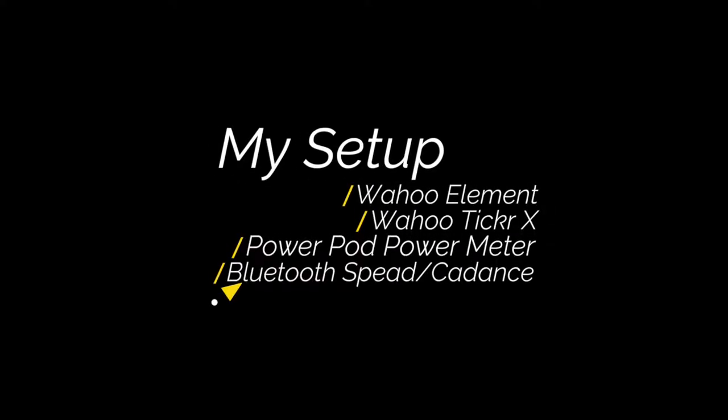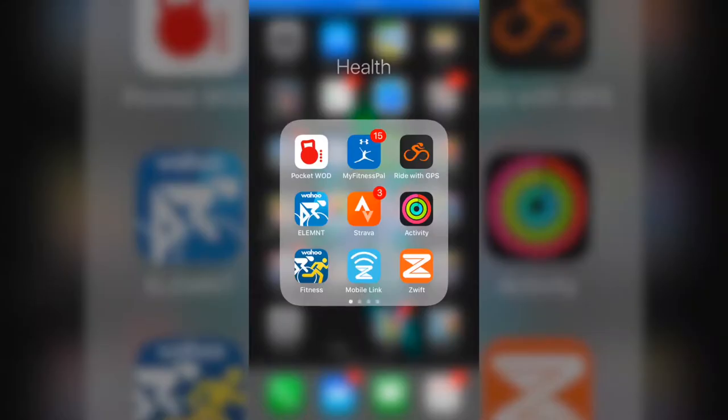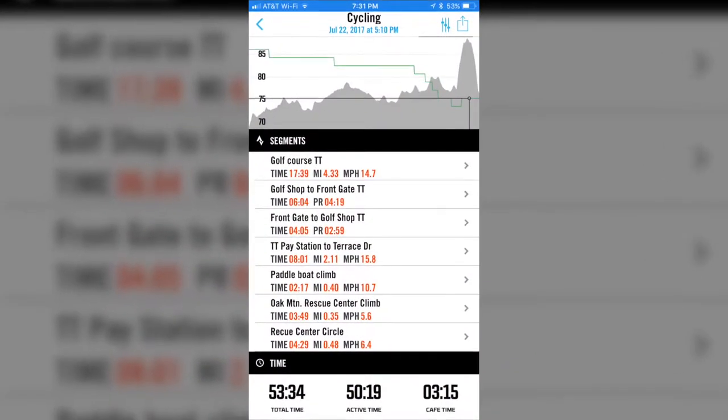Quick little bit about my setup. I've got a Wahoo Element GPS, Wahoo Ticker X for heart rate, power pod, power meter, and standard Bluetooth speed and cadence.